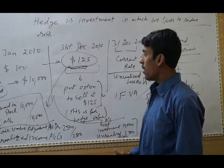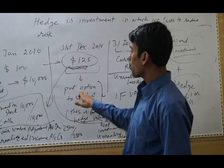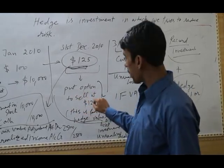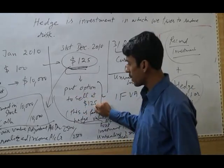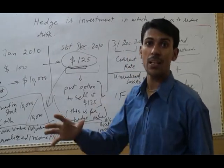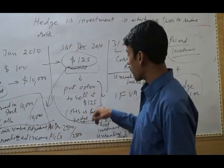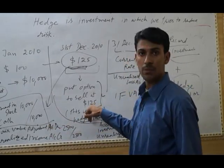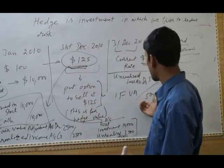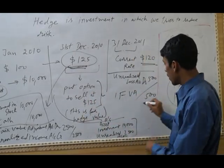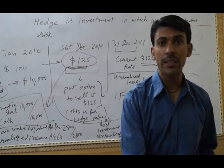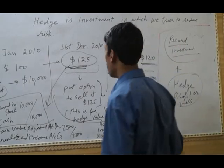Now this loss will be covered with the put option to sell at $125. So we are gaining from this option — we can sell the same stock at $125 and adjust our loss. I am just showing its journal entry.